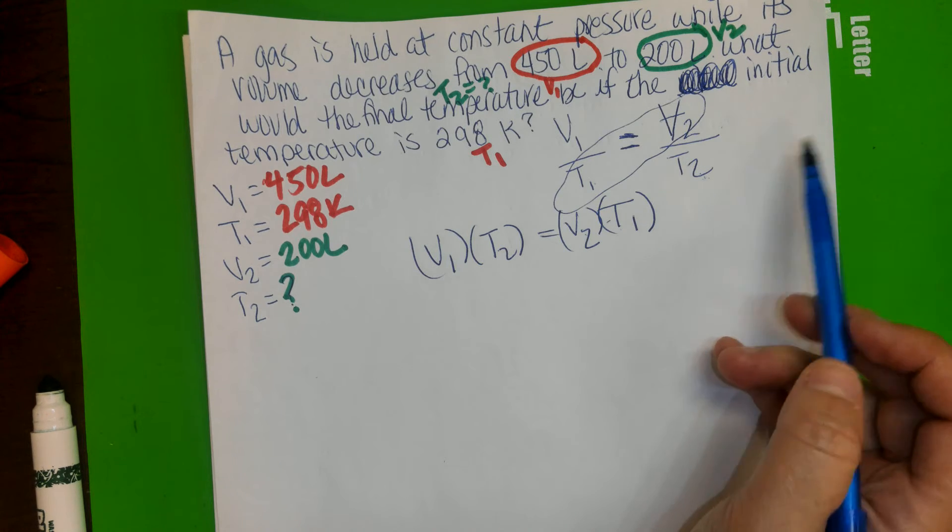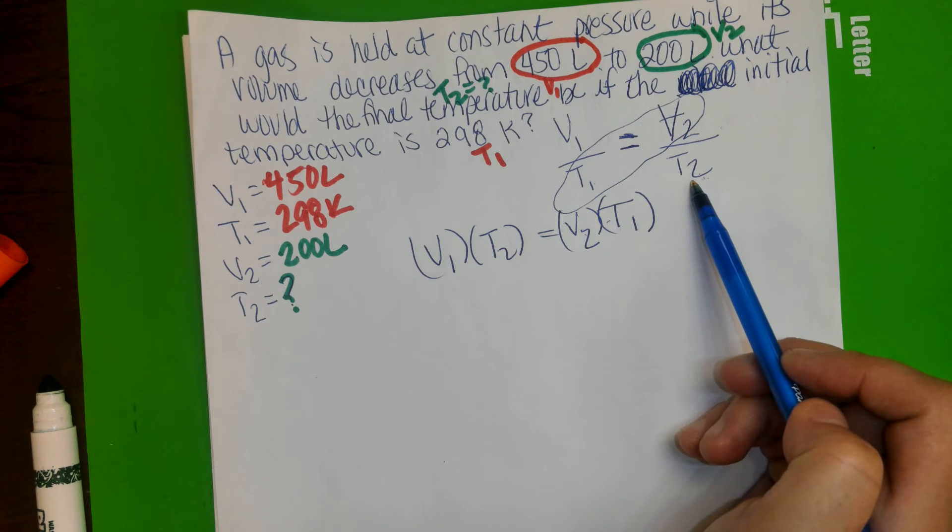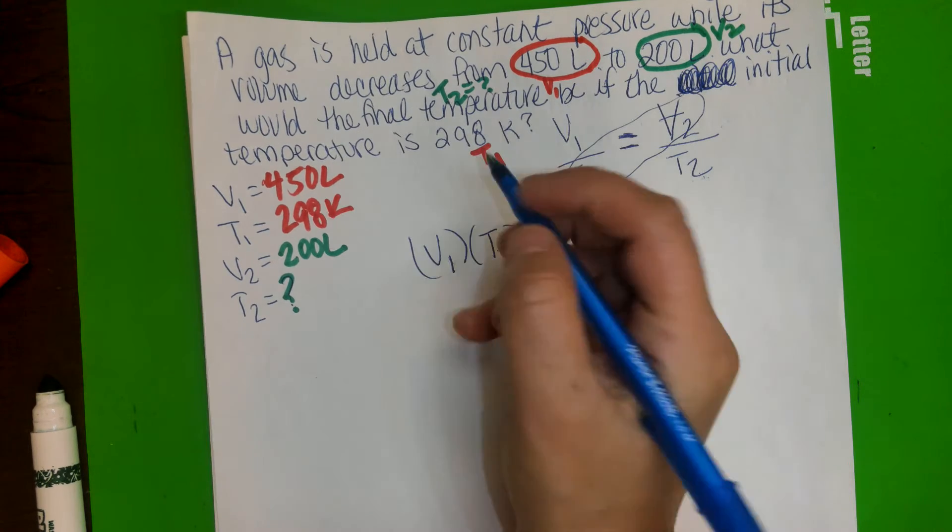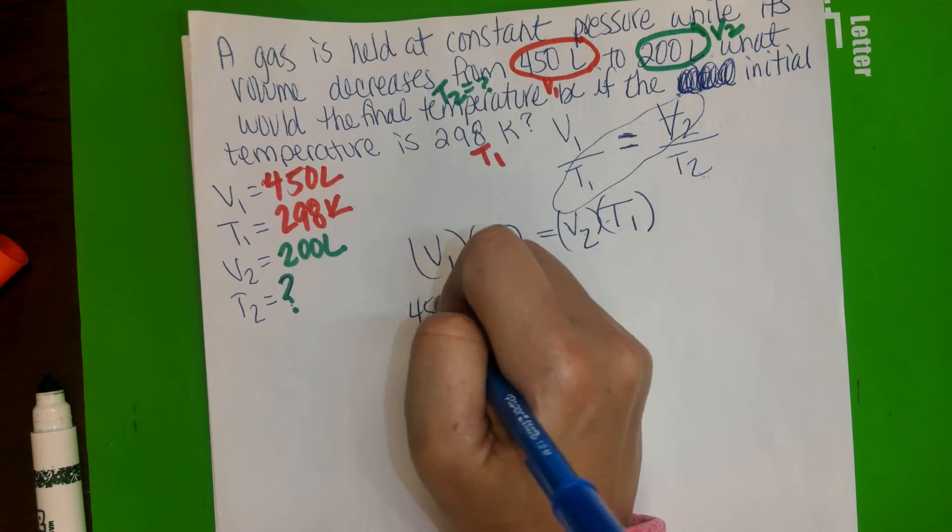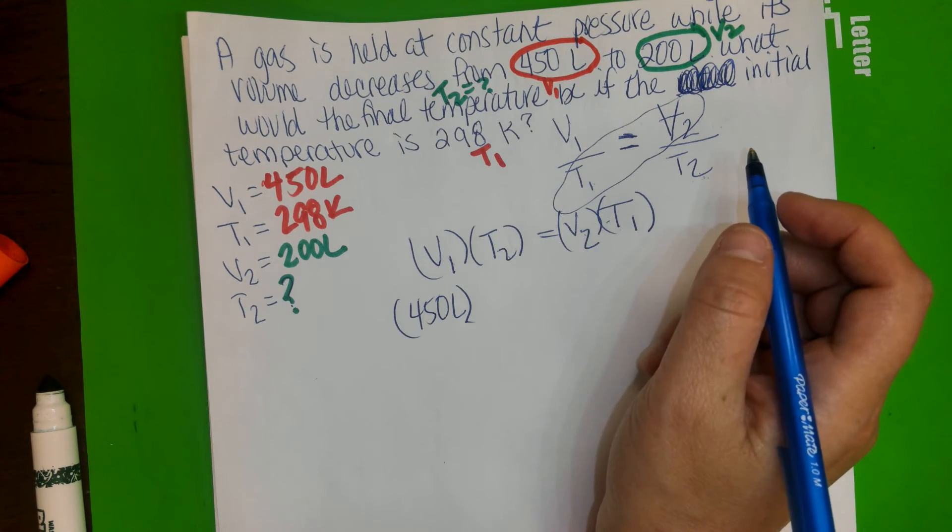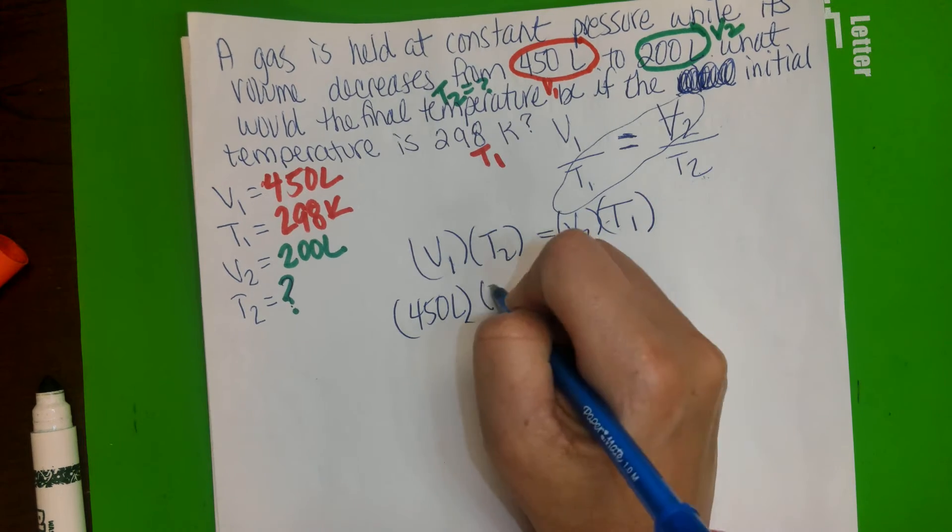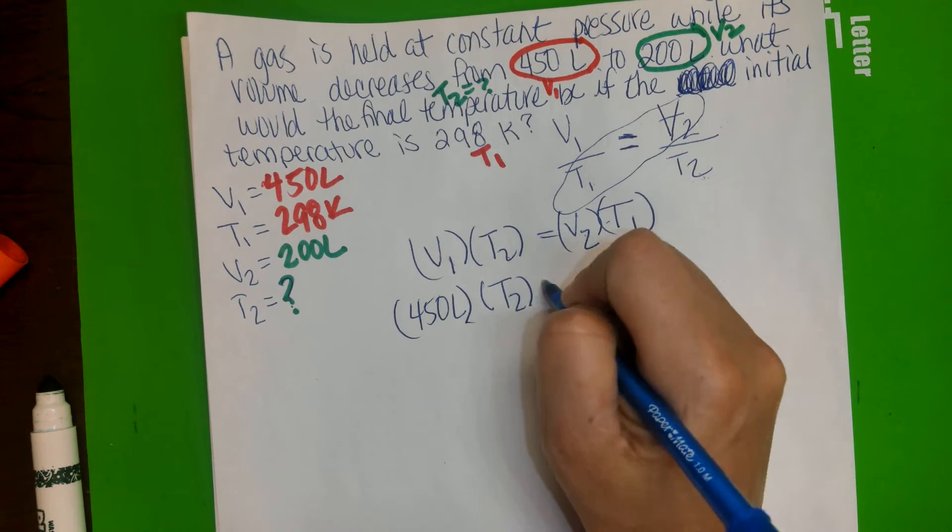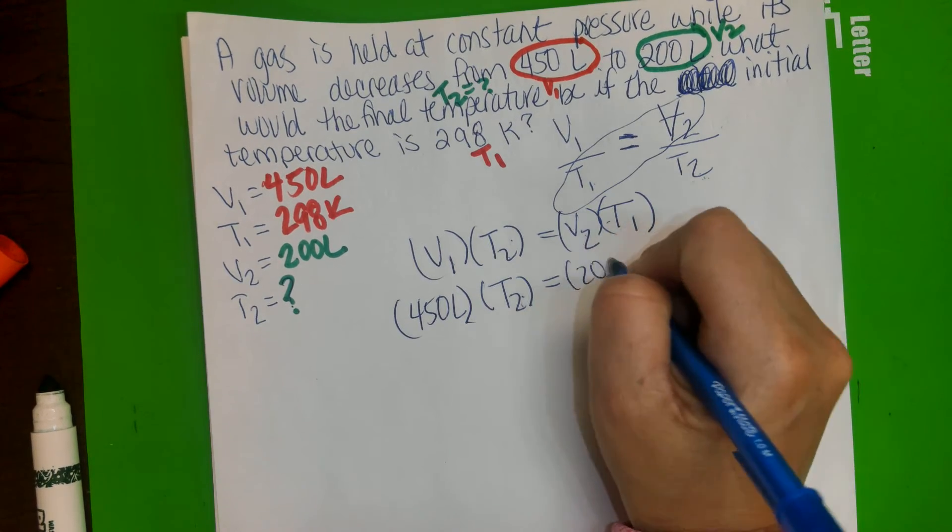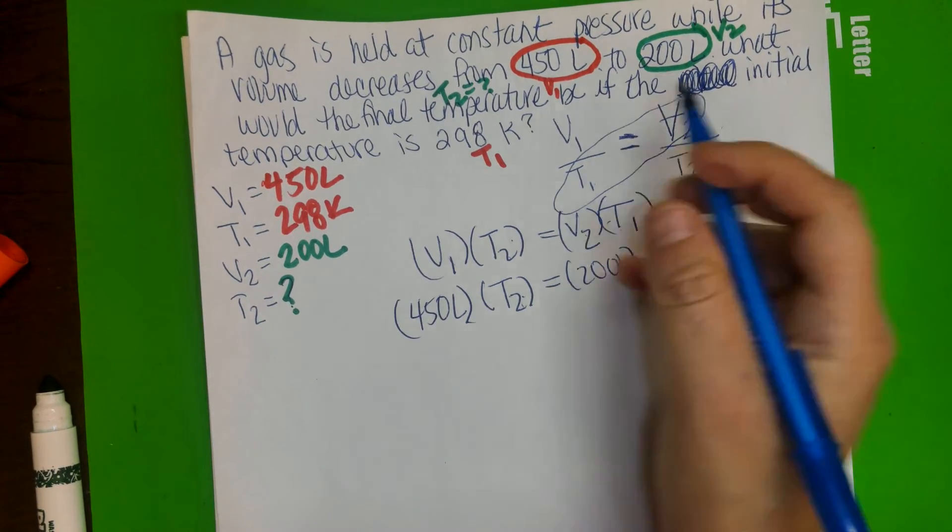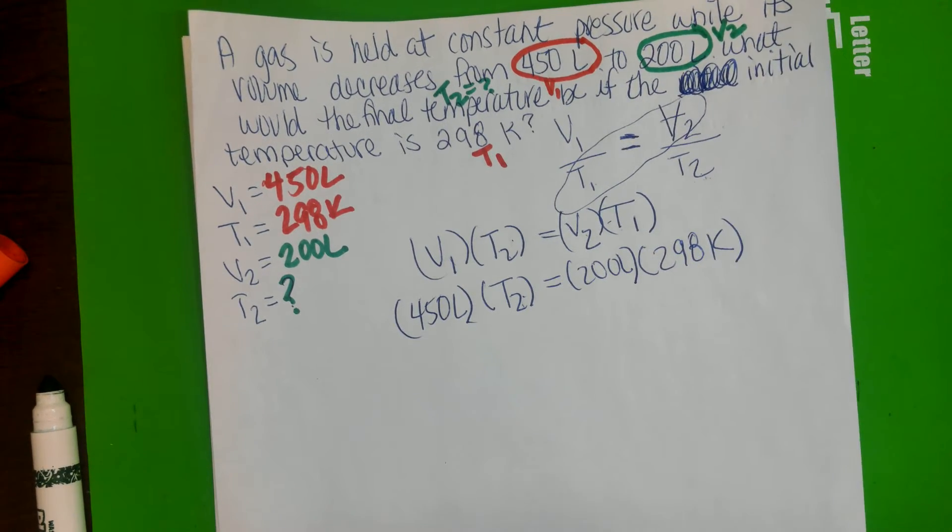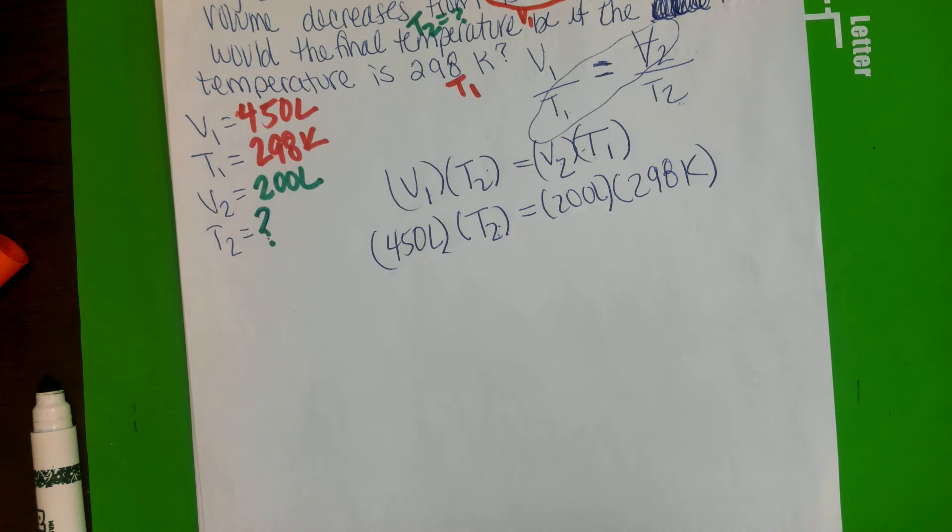After that, we're going to go ahead and plug in our numbers. V1 is 450 liters. T2 is, we don't know, that's our variable, so we're going to keep it the same. And then V2 is 200 liters, and then T1 is 298 Kelvin.